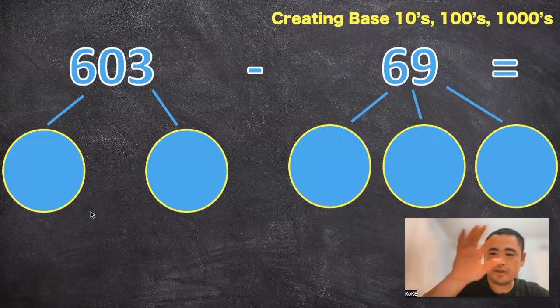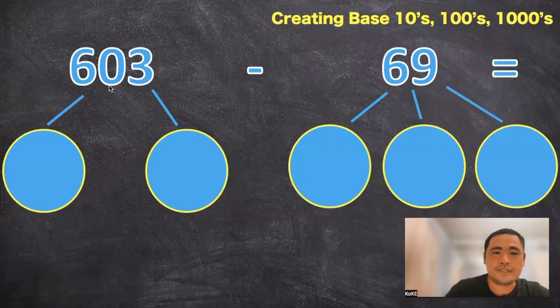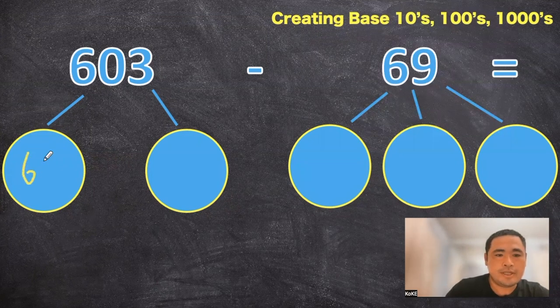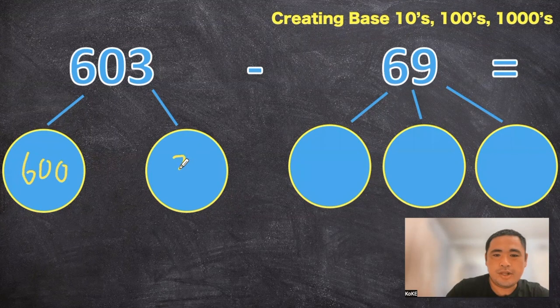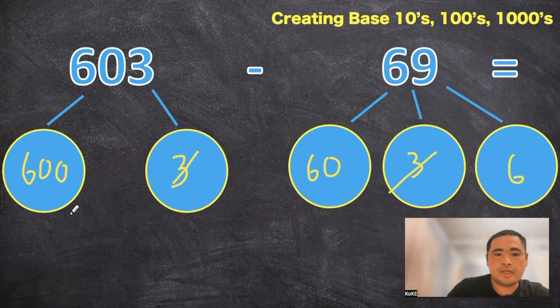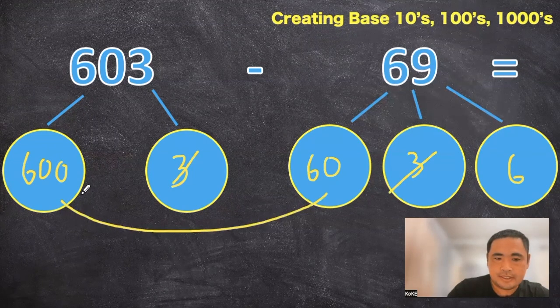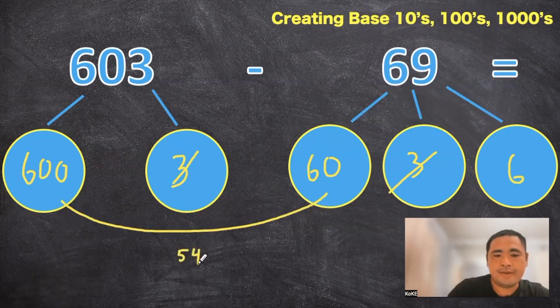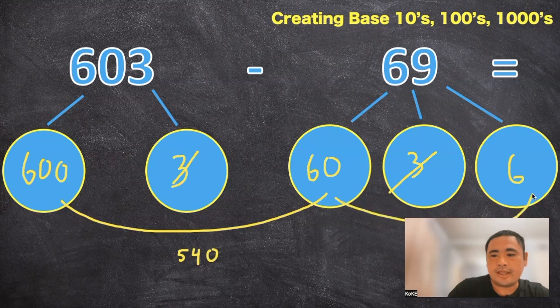So let's practice subtraction the horizontal way. So the six hundred three can be broken down into six hundred and three. And for the sixty nine, if you play around with it, maybe a good combination would be sixty three and six. So if you notice the threes can cancel. And if you subtract the sixty and the six hundred and the sixty, we can get five forty. And then subtract that last six. So our answer is going to be five hundred and thirty four.